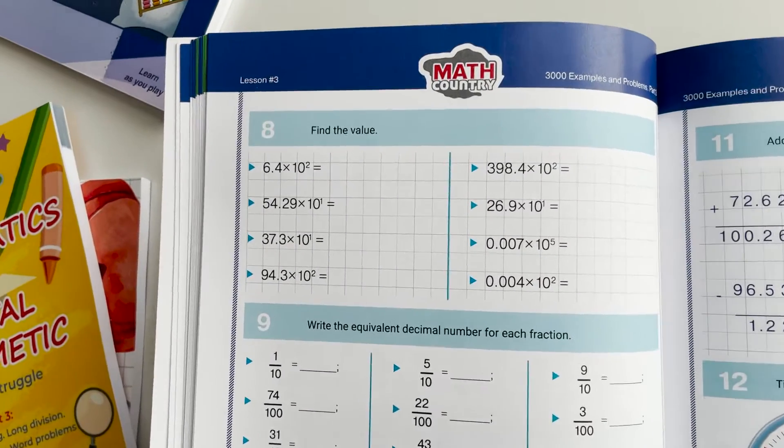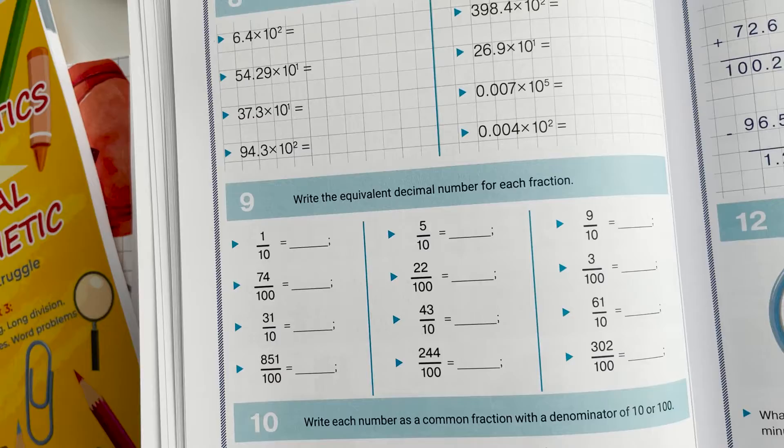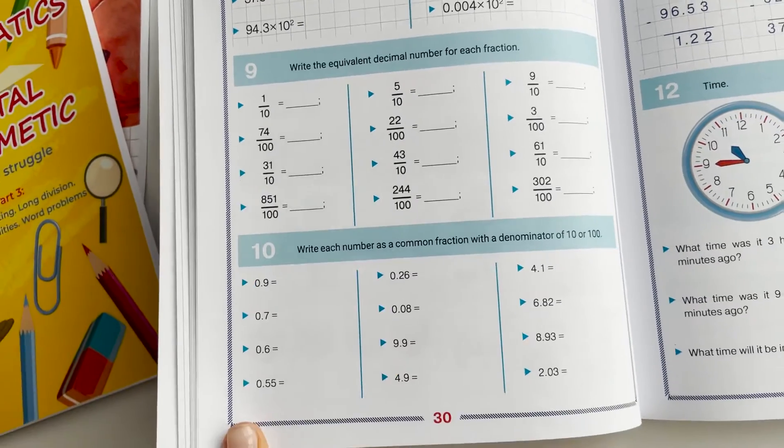Young learners find a link between decimal and ordinary fractions, and they convert some fractions to others.